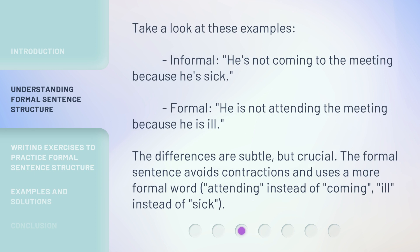Take a look at these examples. Informal: he's not coming to the meeting because he's sick. Formal: he is not attending the meeting because he is ill. The differences are subtle but crucial. The formal sentence avoids contractions and uses more formal words — 'attending' instead of 'coming,' and 'ill' instead of 'sick.'